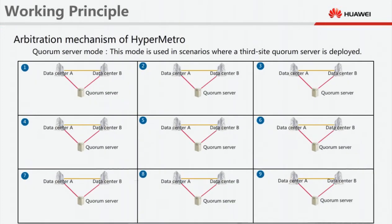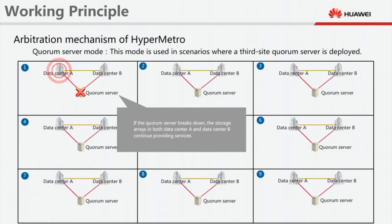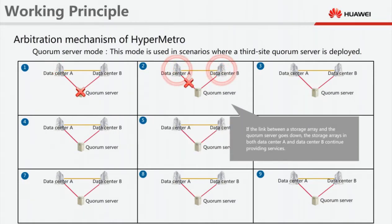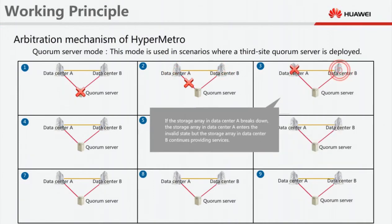Quorum server mode is used in scenarios where a third-site quorum server is deployed. If the quorum server breaks down, the storage arrays in both data center A and data center B continue providing services. If the link between a storage array and the quorum server goes down, the storage arrays in both data center A and data center B continue providing services. If the storage array in data center A breaks down, it enters the invalid state, but the storage array in data center B continues providing services.